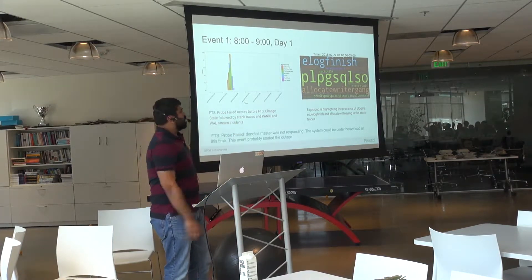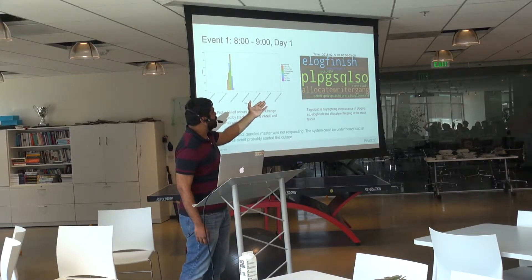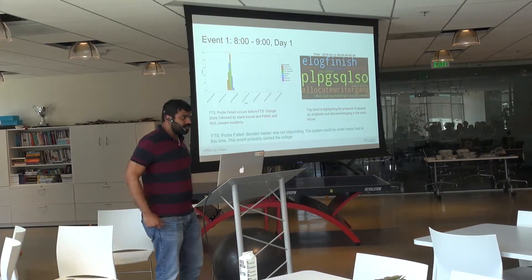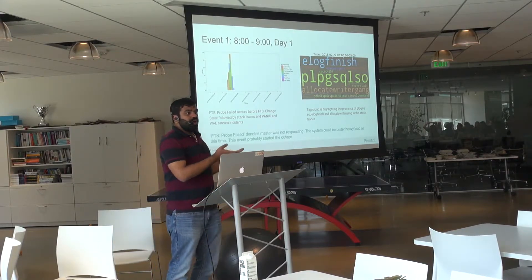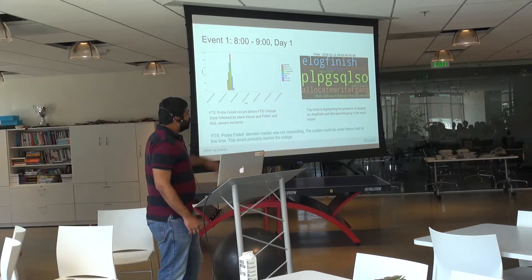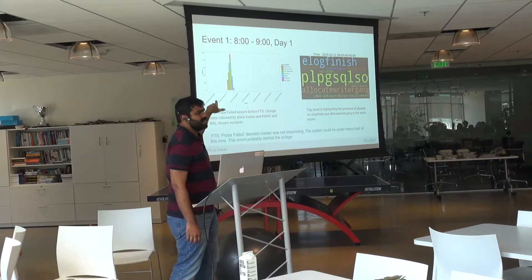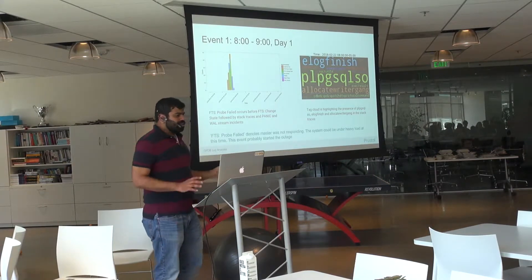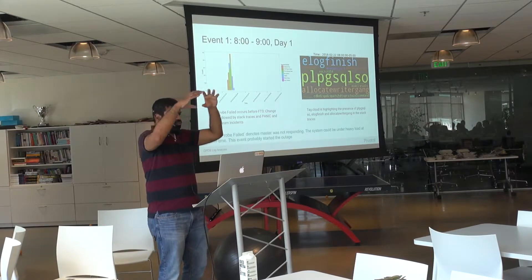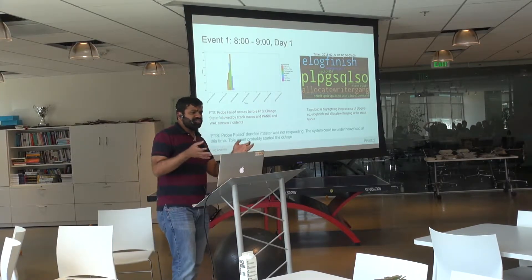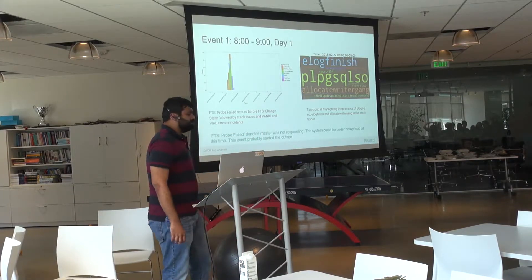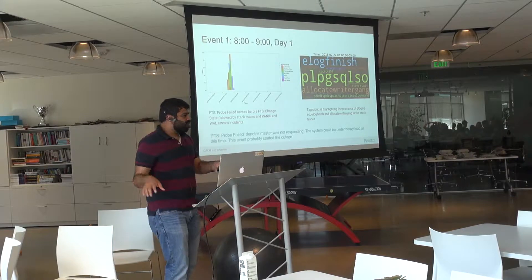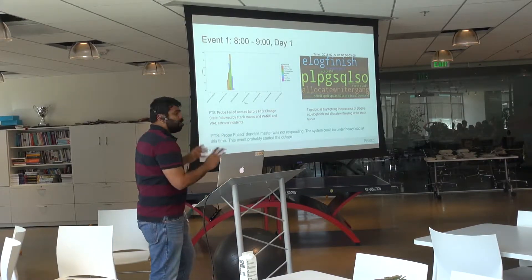When I first saw PLPGSQL.SO I had no idea what its significance was. But when I put these two graphs in front of the subject matter experts — the Greenplum product team — they immediately understood. The conclusion was that FTS probe failed denotes the master was not responding. In that architecture, one of the chief reasons this happens is when the system is under heavy load. So the master stopped responding, we got a bunch of FTS probe failed messages, and that probably started the outage.